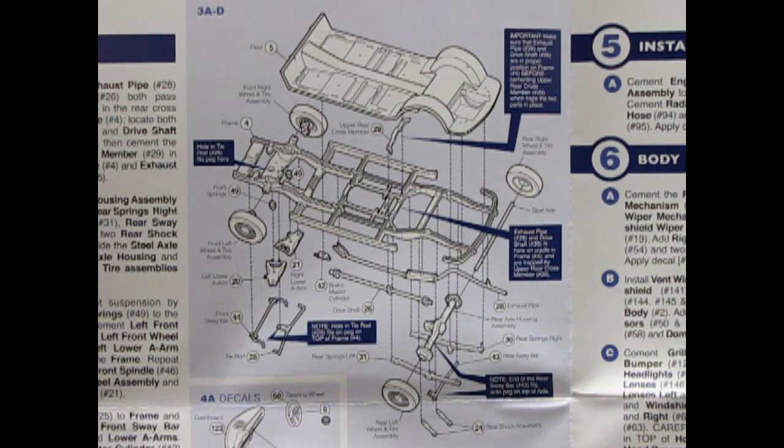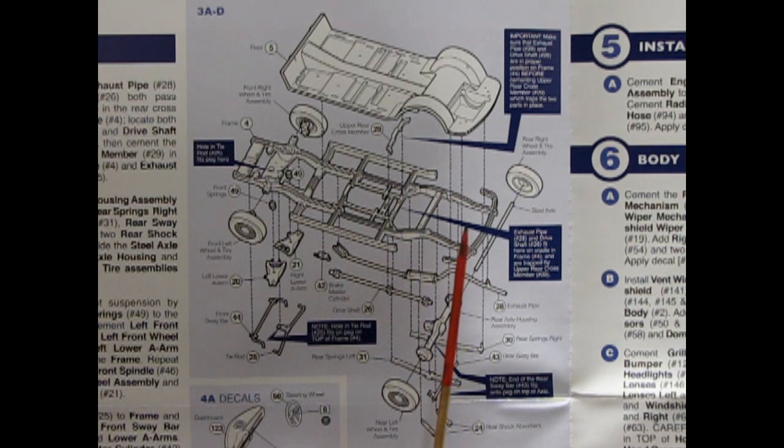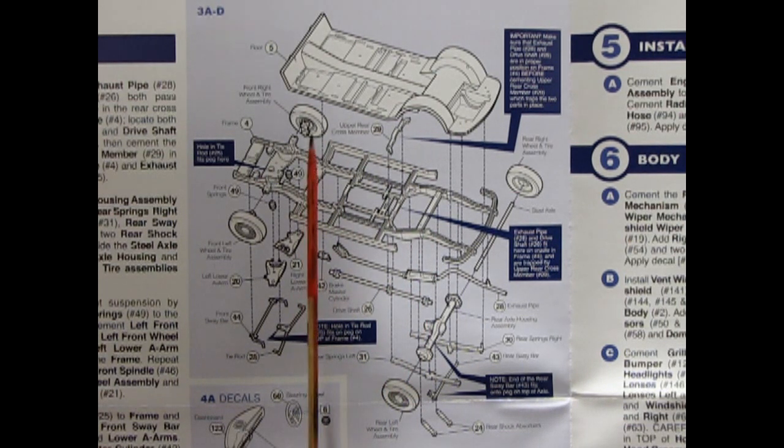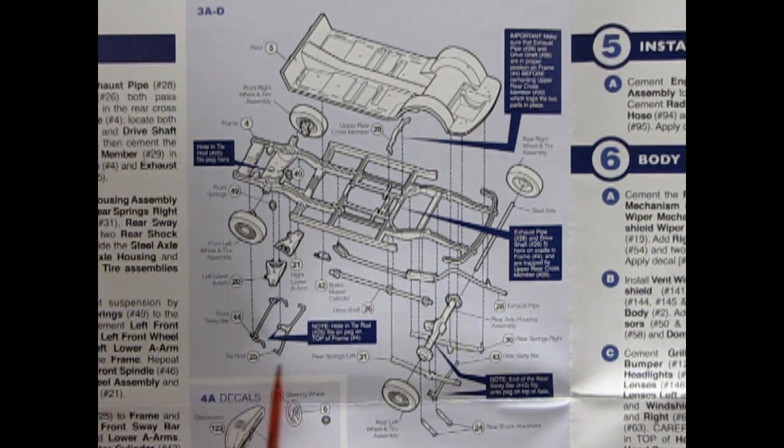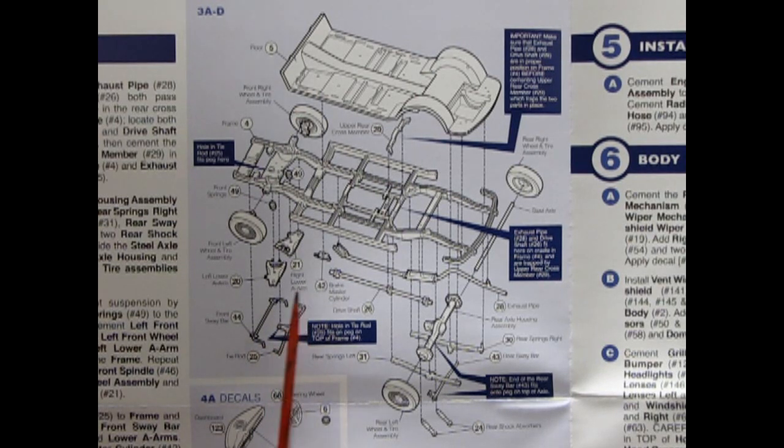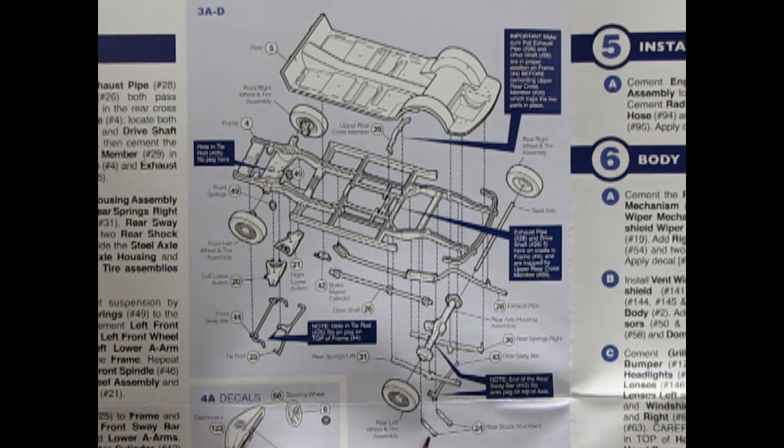Our next panel shows our chassis assembly. Here we have the floor pan going on to our step down frame and we also have our wheels going in place as well as the two front springs, lower right and left hand A arms, front sway bar, tie rods, brake master cylinder, exhaust system, drive shaft, differential, rear springs. This has got a metal axle in the back and then you've got some shock absorbers and another sway bar.